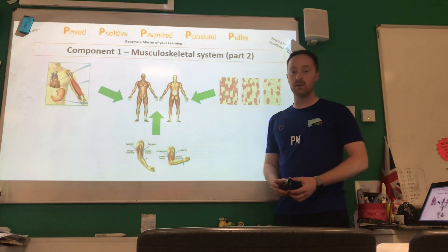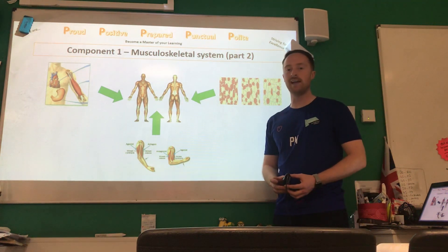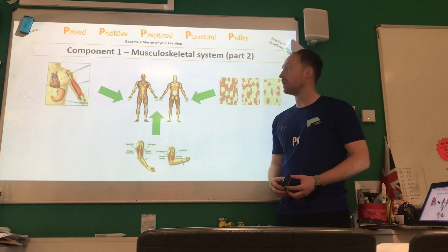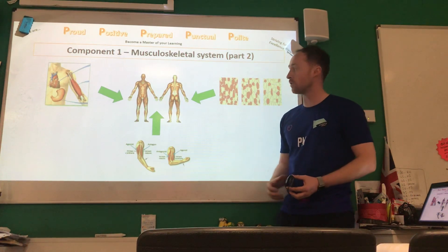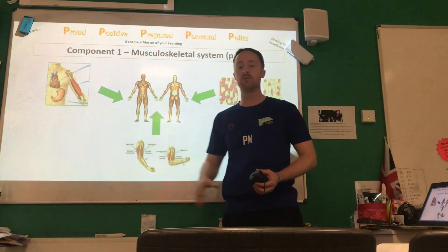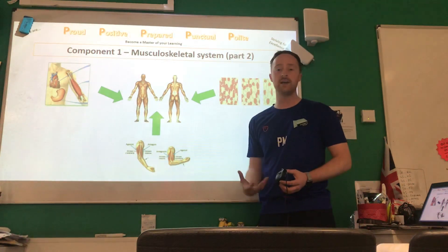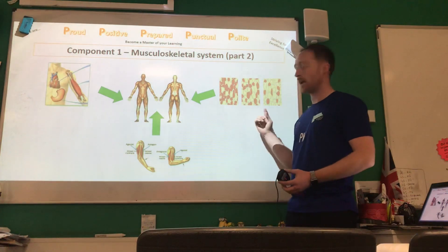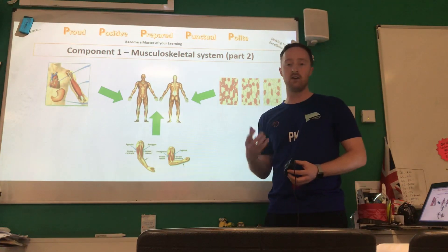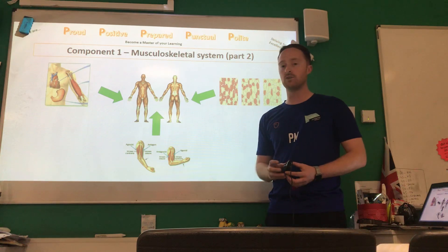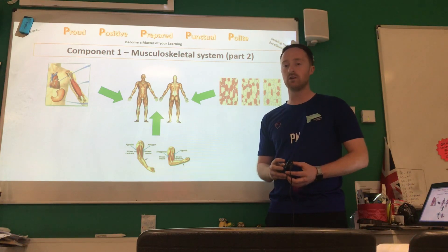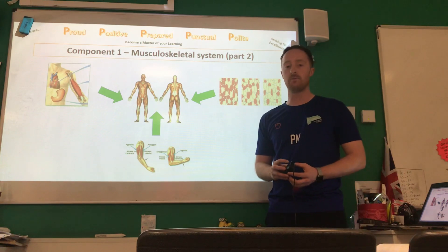Hello everybody and welcome to the next video podcast for GCSE PE EdXL. Today we're looking at component 1, part 2 of the musculoskeletal system. We're going to be looking specifically at the muscular system, the different types of muscle, how muscles work together to produce movement, and the different types of muscle fibre useful for sport. Make sure you've got your notes by your side, and feel free to pause and rewind the video podcast to help you.